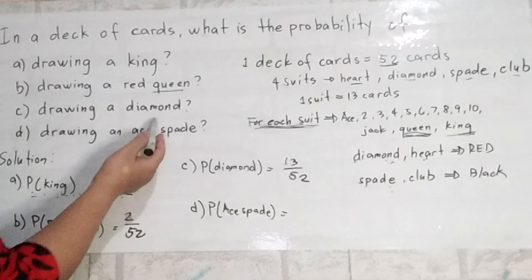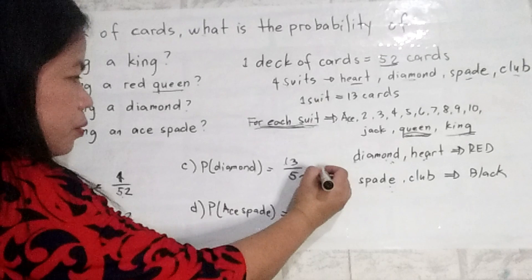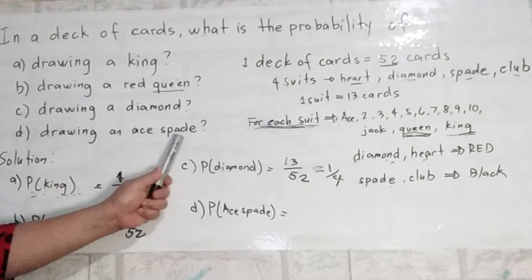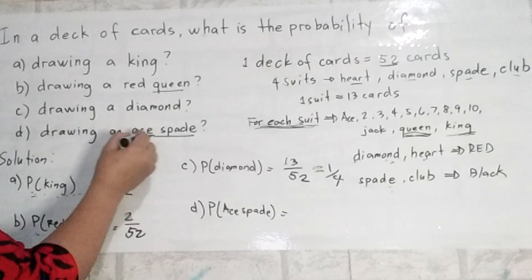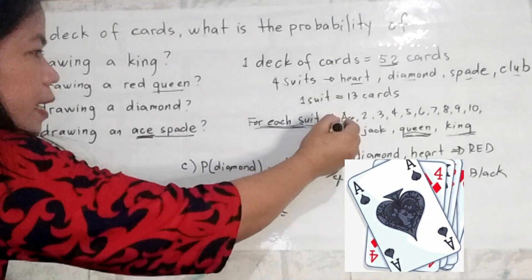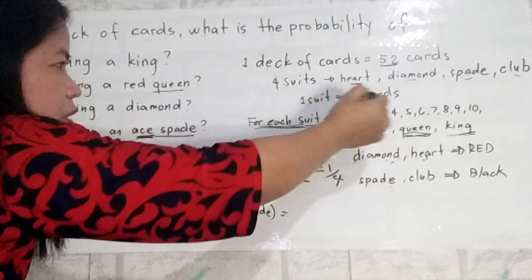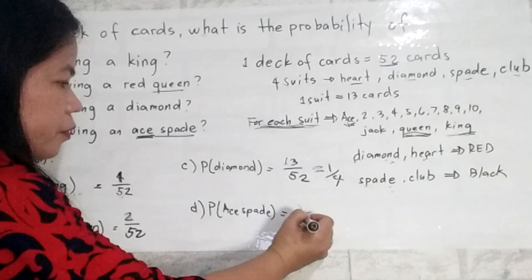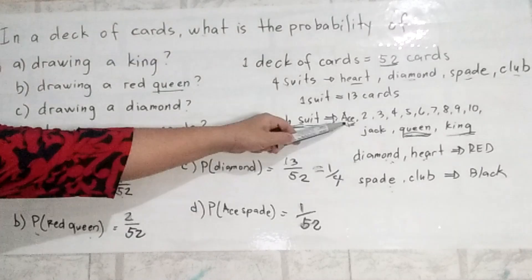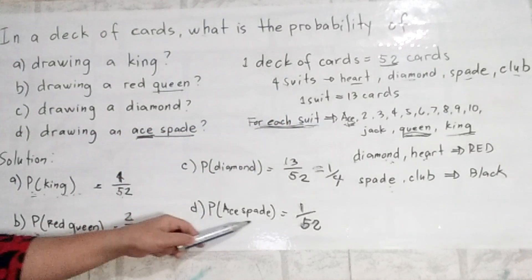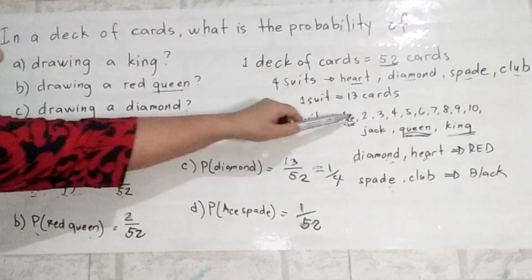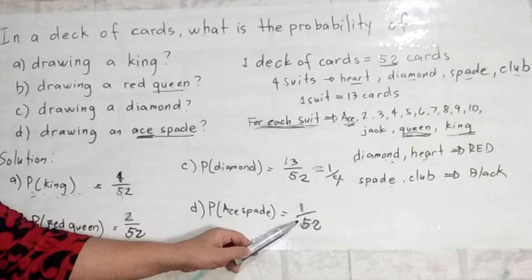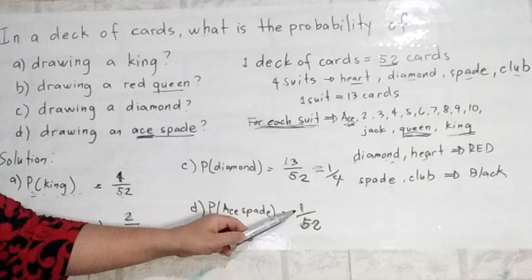Because we have 13 diamonds, 13 hearts, 13 spades, and 13 clubs — each suit represents 1 fourth of all cards. For drawing an ace of spades, we are talking about one specific card. A spade has 13 cards and we have one ace of spades. So the probability is 1 over 52. When we talk about any specific card, the probability is always 1 over 52 — one card, one favorable outcome.